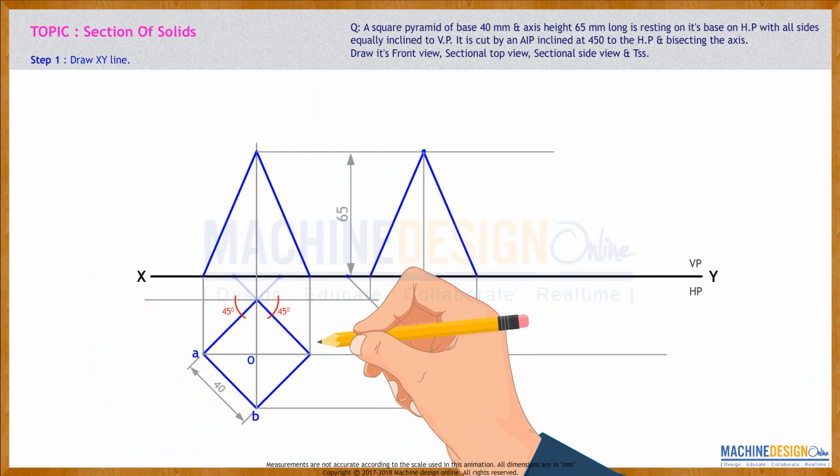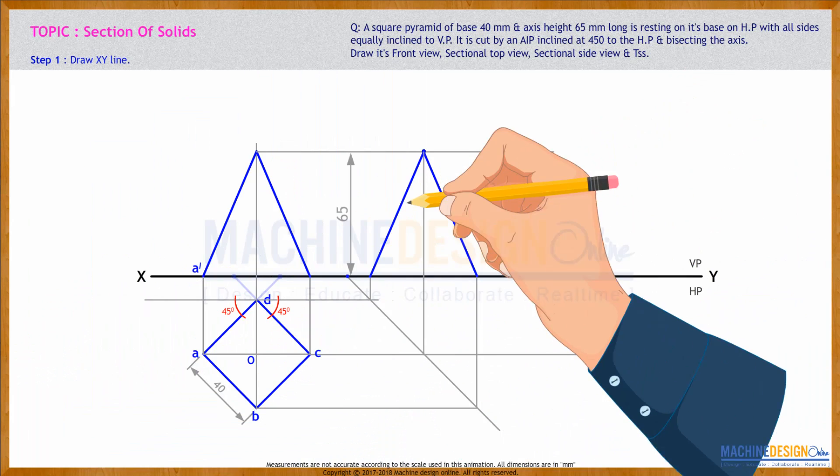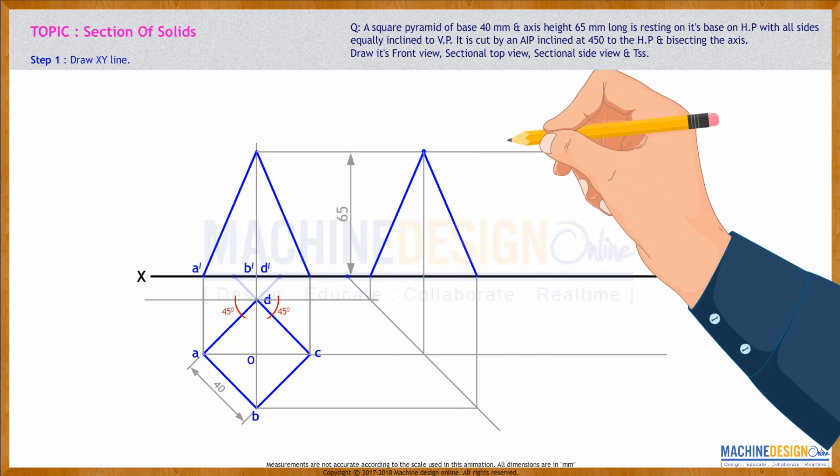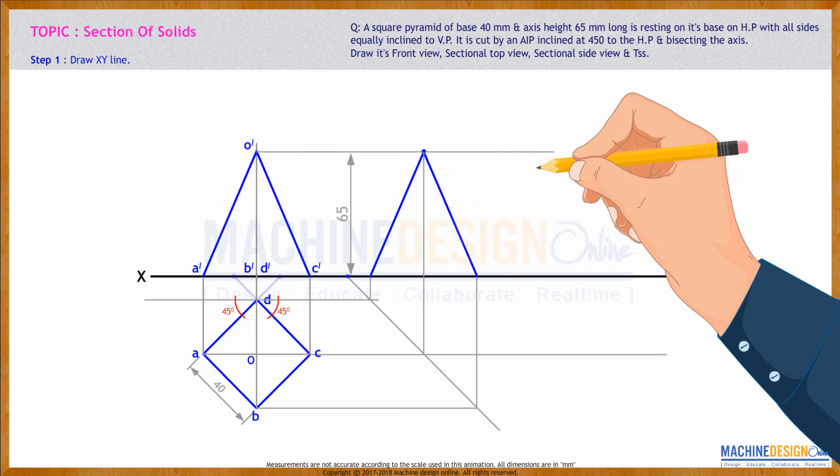We'll name that A, B, C, D. Top view: A dash, B dash, D dash, C dash, O dash.